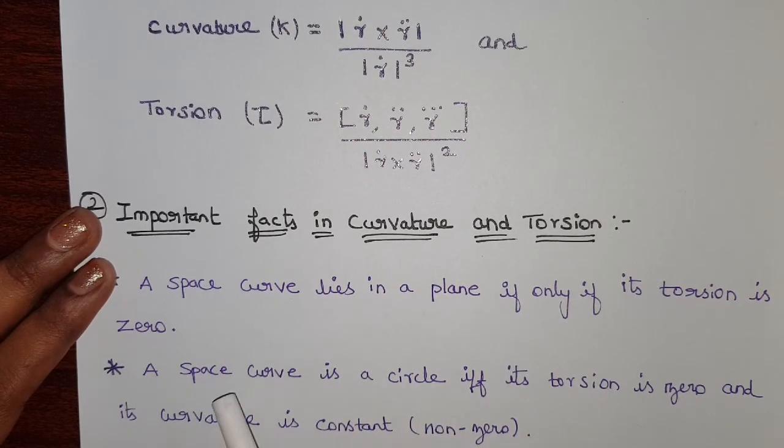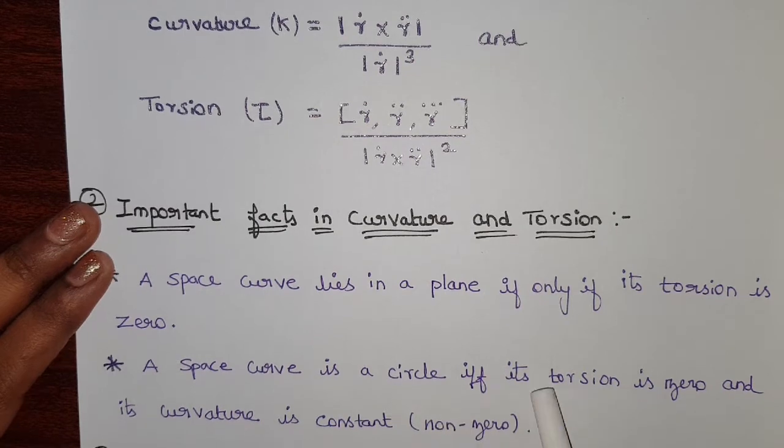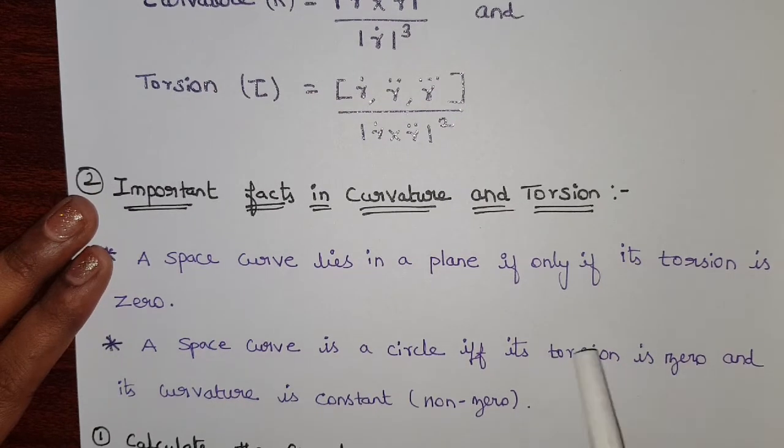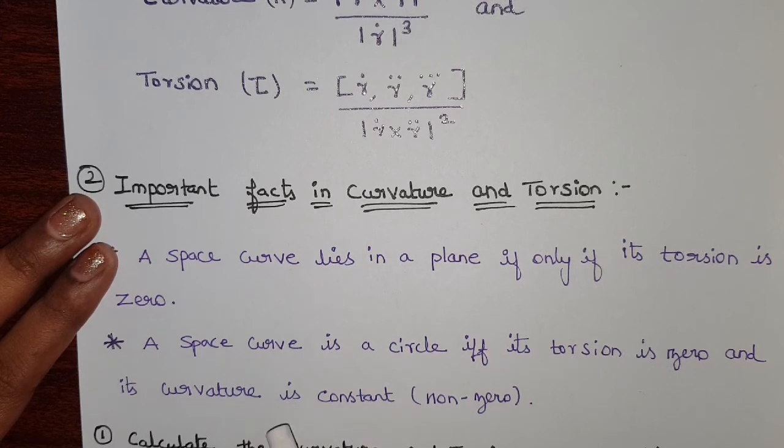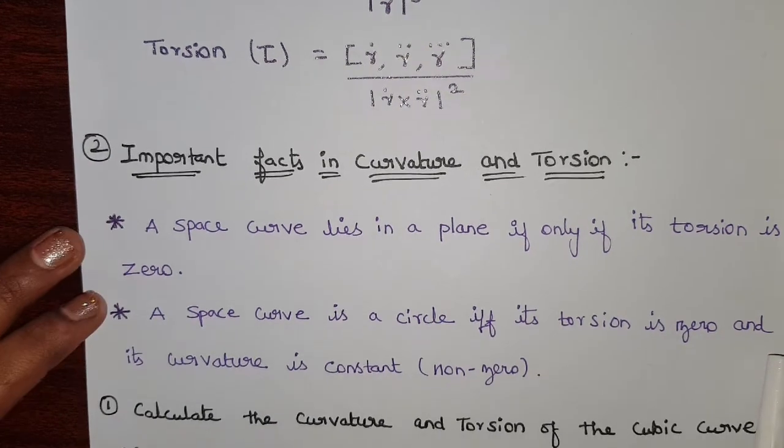A space curve is a circle if and only if its torsion is zero and its curvature is constant. Constant means non-zero. The curvature should be a non-zero value and torsion should be zero. Then the space curve is a circle. These two are important.